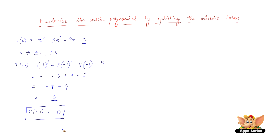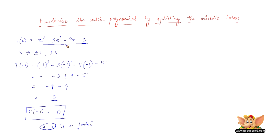Because of this, we can conclude that (x + 1) is a factor of x³ - 3x² - 9x - 5, and this comes from the factor theorem. Since (x + 1) is a factor, this expression can be completely divided by (x + 1).